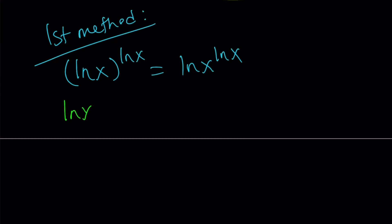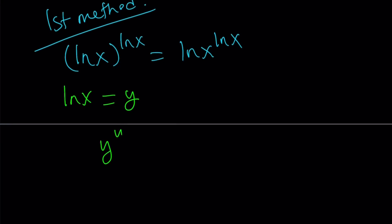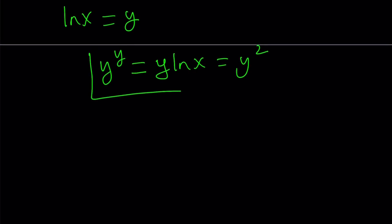Let's set ln x equal to y. And now you get y to the power of y. The right-hand side isn't that nice. It just becomes when you move the ln x to the front, it's just going to be y ln x, or you can write it as y squared. Okay, great.